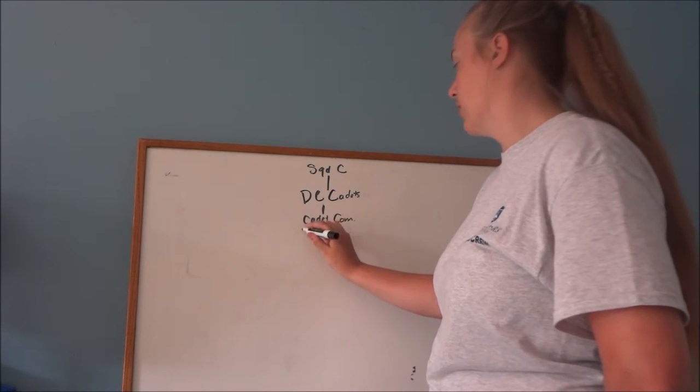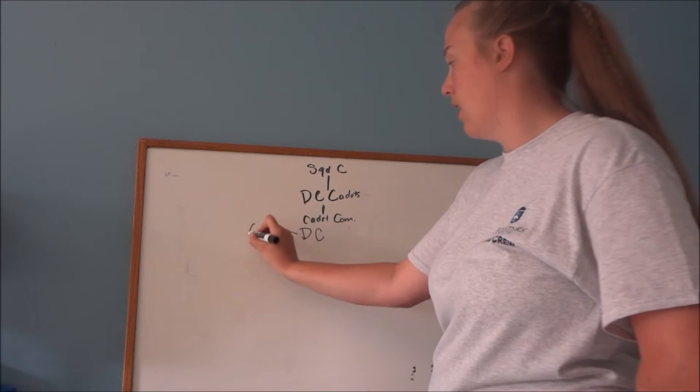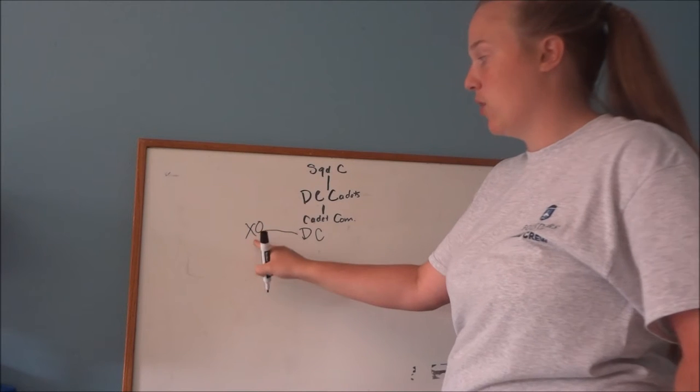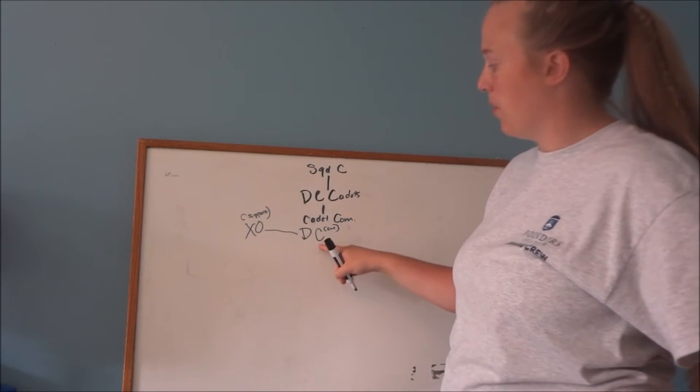Then it goes down to your deputy commander. And you may or may not have an XO. The XO would be in charge of support staff and the DC would be in charge of line staff.